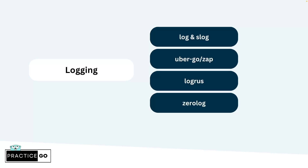Coding without proper logging is like sailing without a compass — you may know where you are going but you will have no idea how you got there or how to navigate back. Logging is very important. Golang has good built-in packages: Log and its extension Slog. Both serve well for almost all cases, but there are more options. Uber's GoZap is highly customizable and very fast, and other options include Logrus and Zerolog.